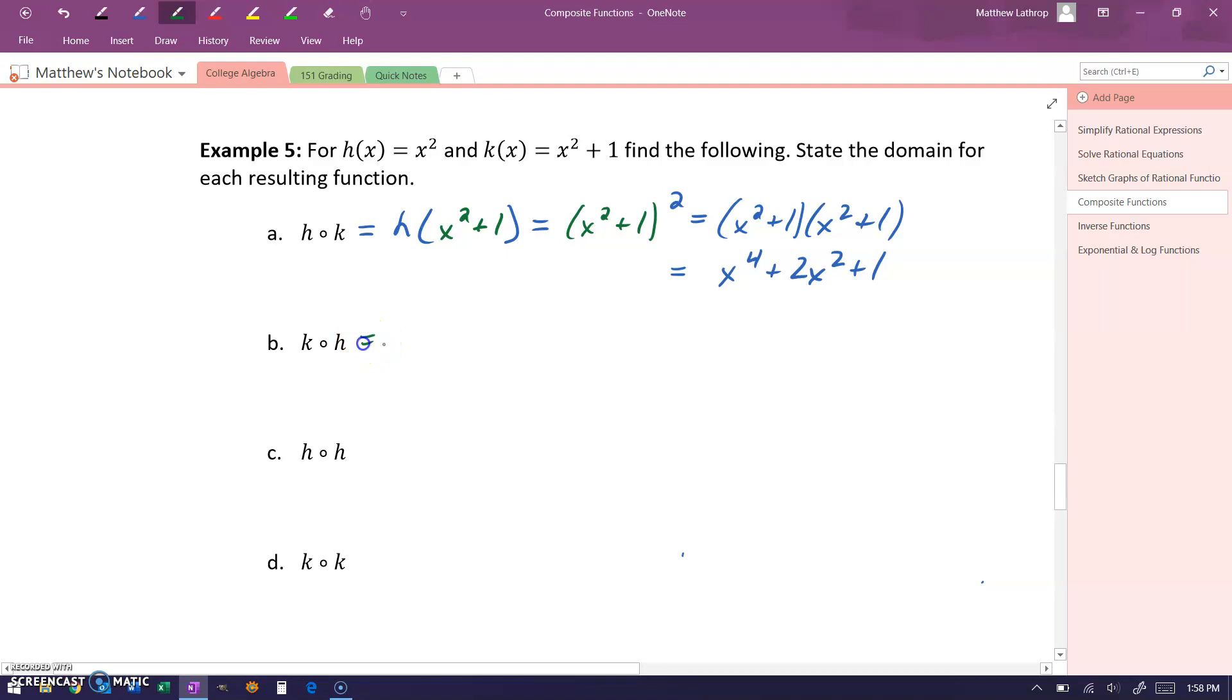Evaluating k of h will mean we want to take our function k and evaluate it at x squared. So we'll start off by taking that quantity x squared squared plus one to get x to the fourth plus one.